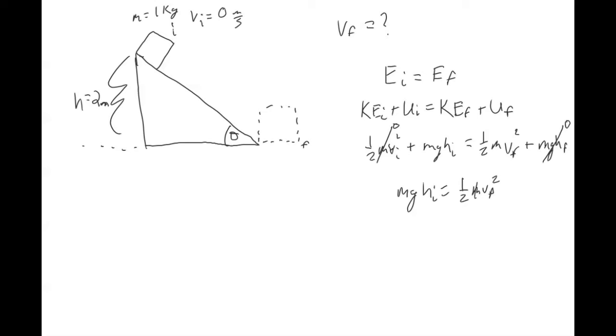You'll see that your m's cancel. Then I multiply the two to the other side. And then I take the square root of both sides. And so if I wanted to plug in my numbers, this would be two times 9.8 times two. So that's going to be 6.26 meters per second.